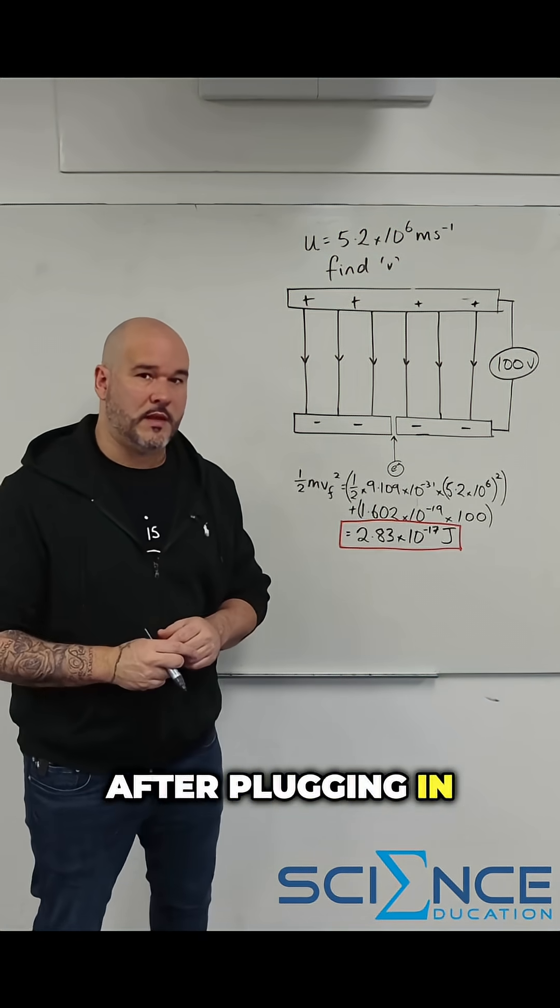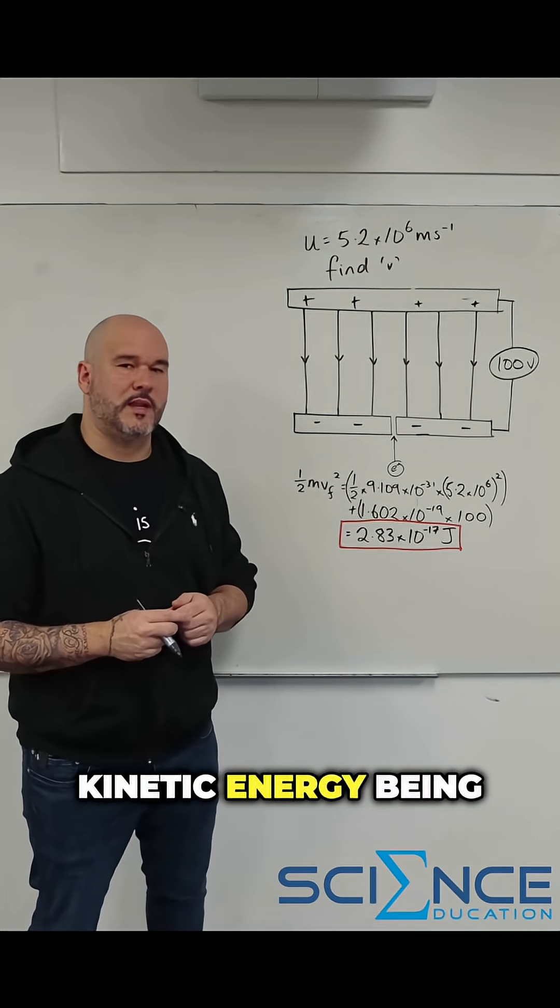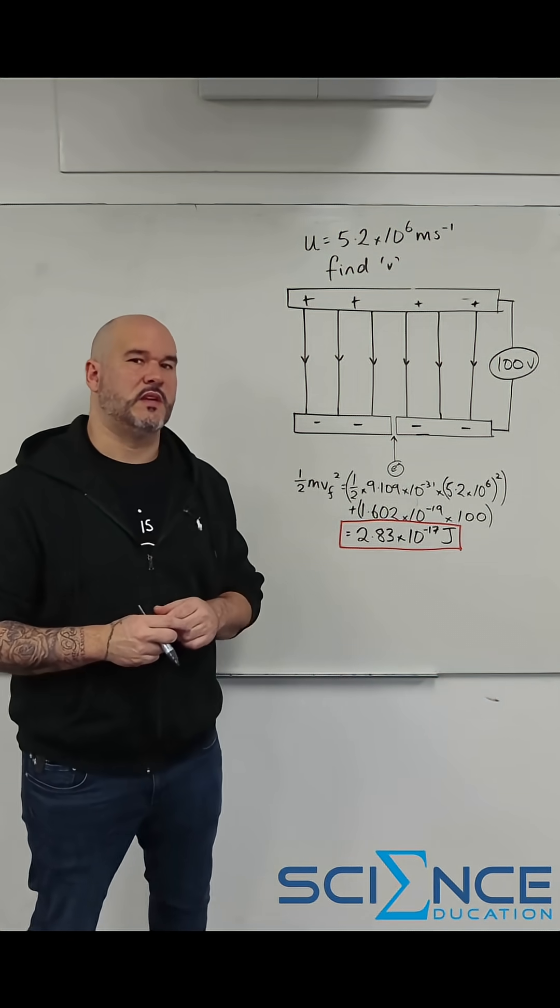So let's plug in some numbers. After plugging in the known data we end up with the final kinetic energy being 2.8 times 10 to the minus 17 joules.